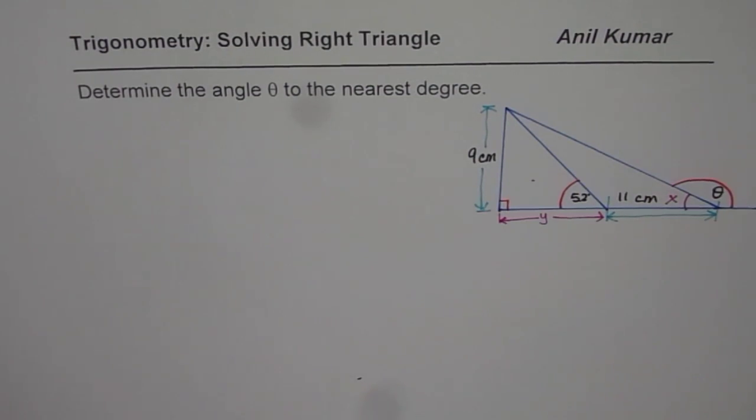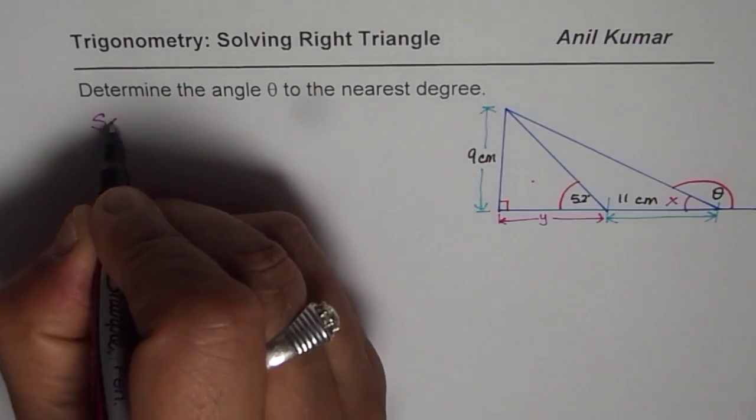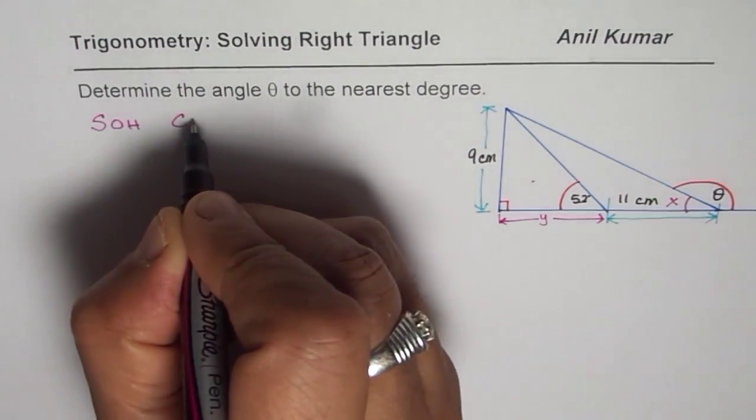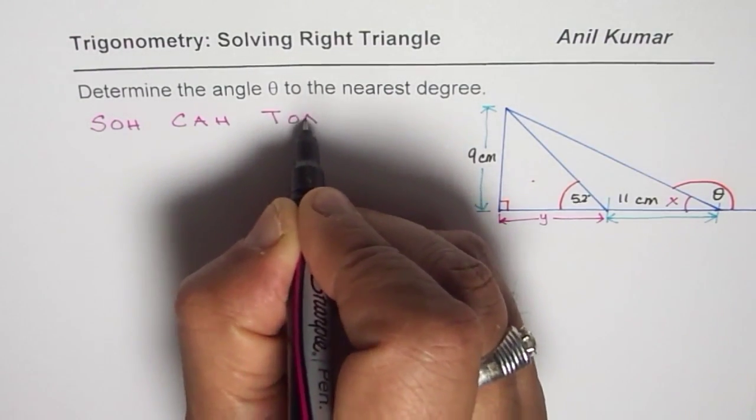So let me first write down what is sine, cosine and tan. So we know sine is opposite over hypotenuse. Cos is adjacent over hypotenuse. And tan is opposite over adjacent.